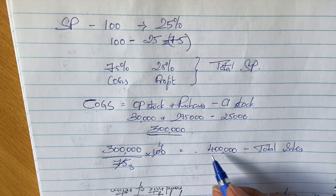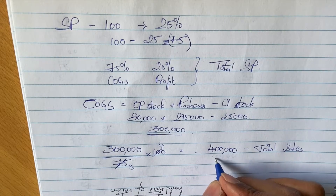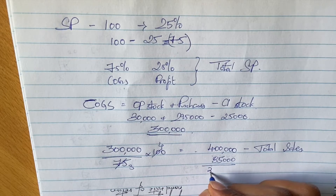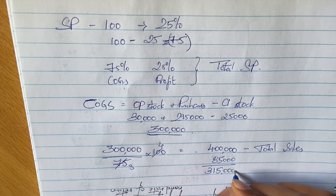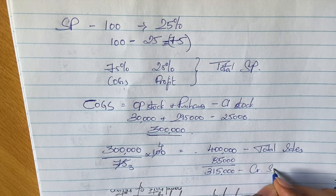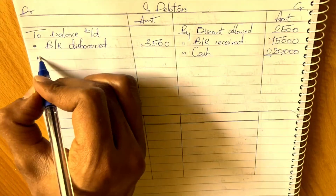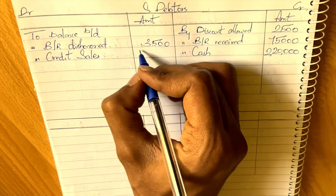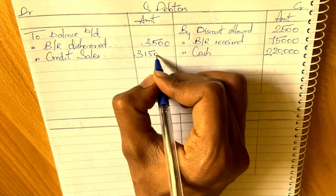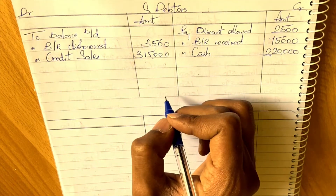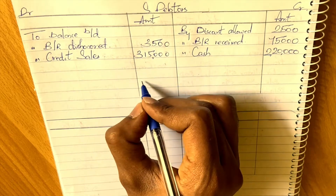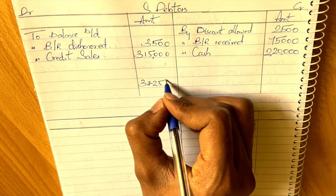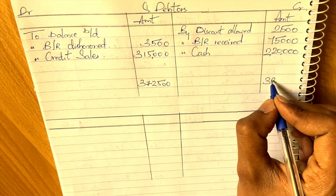Out of total sales of 4 lakhs, 85,000 was cash sales, which means the remaining — 3,15,000 — is credit sales. So credit sales is 3,15,000. This figure goes on the debit side of the debtors account. The total on the debit side comes to 3,72,500, and that helps us find the balancing opening debtors figure.